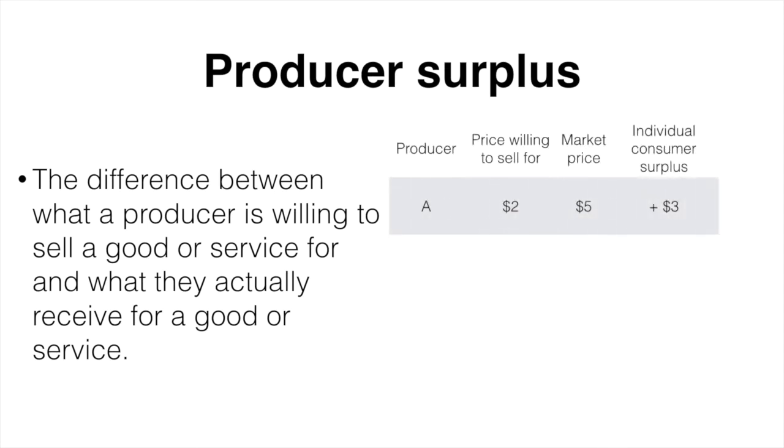Producer A is willing to sell for $2 and actually sells for $5, therefore they enjoy a surplus of $3. Producer B is willing to sell for $3 and actually sells for $5 and enjoys a surplus of $2. Finally, producer C is willing to sell for $4 and actually receives $5 so they enjoy a surplus of $1. The total surplus would be $6 for these three producers.